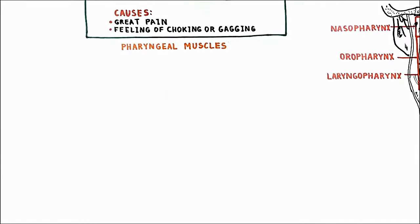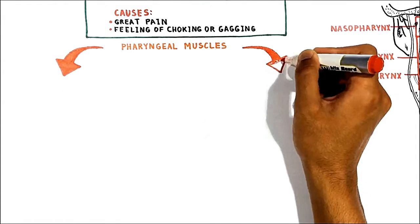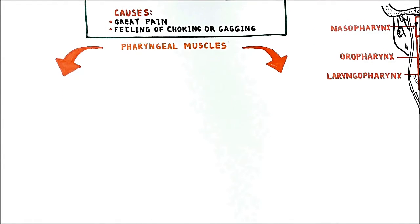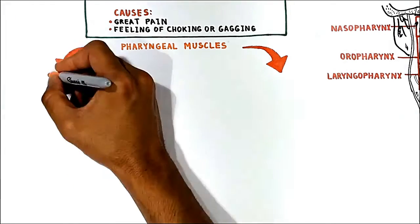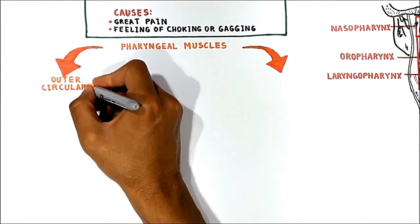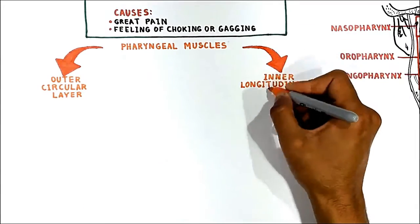Next, let's talk about the muscles of the pharynx. This is going into a lot more detail, but it is important to know because they play a role in swallowing and some pathology can occur when there is a disruption of the muscle layers. There are two muscular layers of the pharynx determining the shape of its lumen: the outer circular layer and the inner longitudinal layer.